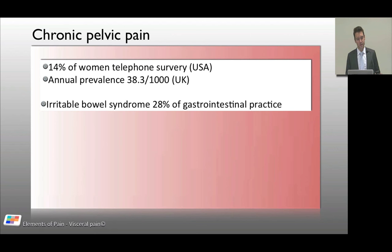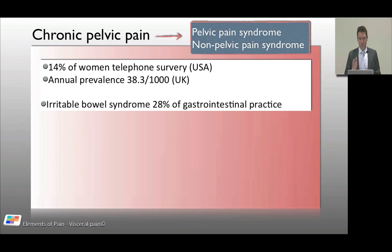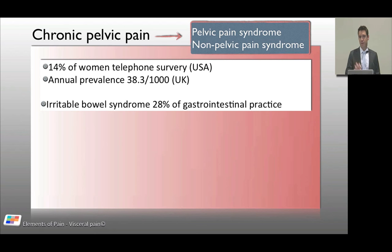It's a common phenomenon. Surveys in the US and UK confirm this. For example, about 28% of patients in gastrointestinal practices were complaining of irritable bowel, which is a functional pain syndrome that can lead to chronic pelvic pain. When thinking about pelvic pain, it could be pelvic pain syndromes or non-pelvic pain syndromes — pain perceived in the pelvis that's not actually coming from the pelvis. Kidney problems, for instance, can be perceived as pelvic. Most pelvic pain syndromes have a trigger, even if inflammation is no longer active.